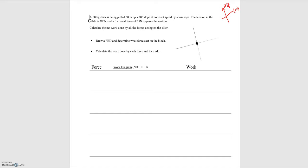Now we can draw our free body diagram. We start with our non-contact force, which is the weight force, pointing downwards. Then the slope is pushing up on the skier opposing some of that weight force, so we draw that in the positive y direction — that's F sub n. We have a tension force from the tow rope pointed up the slope in the positive x direction. And then we have the kinetic frictional force opposing the motion, pointed down the slope in the negative x direction — that's F sub k.